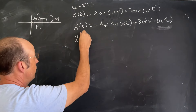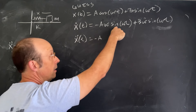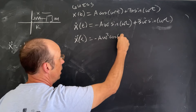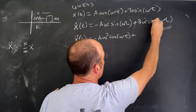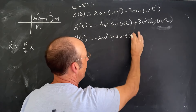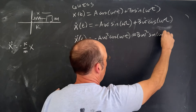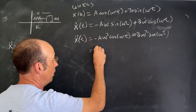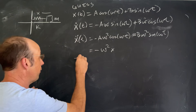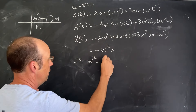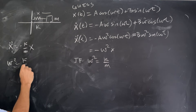Taking the second derivative: x-double-dot equals negative A·ω²·cosine(ωt) minus B·ω²·sine(ωt). If I factor out the negative ω², I get negative ω² times [A·cosine(ωt) + B·sine(ωt)], which is negative ω²·x. So this is true if ω² equals k over m. That's important — omega squared equals k over m must hold.